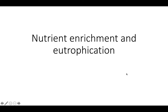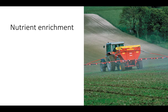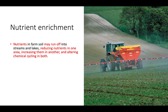This video is going to be about nutrient enrichment and eutrophication. With nutrient enrichment, we're going to have nutrients in farm soil that can run off into streams and lakes. When this happens, we're going to see a reduction in nutrients in one area and an increase in nutrients in another, and because of that change in nutrients, we're also going to see a change in chemical cycling in both of those areas.